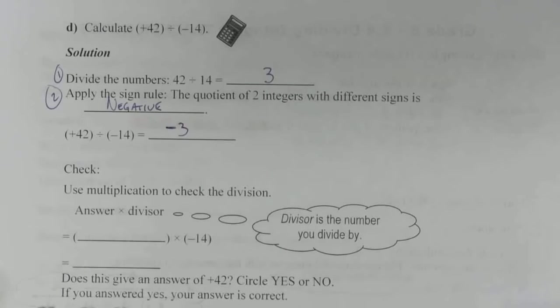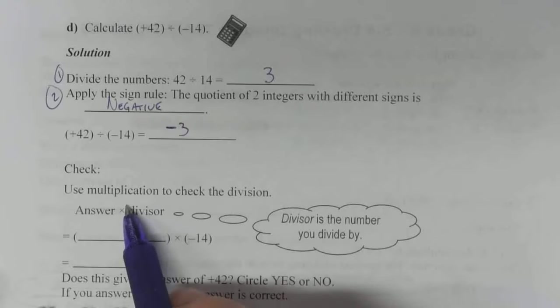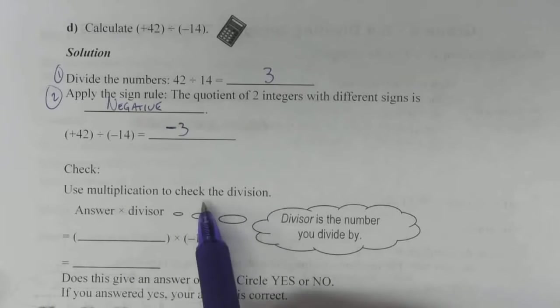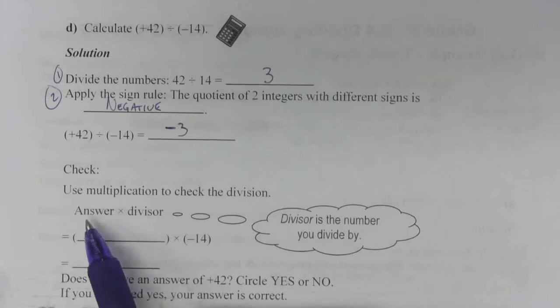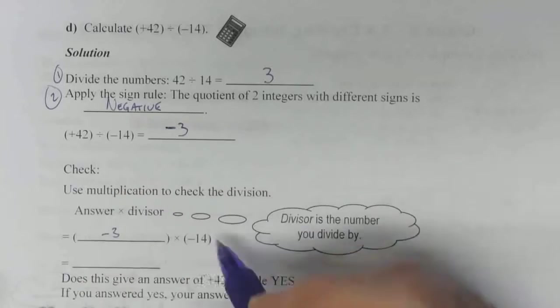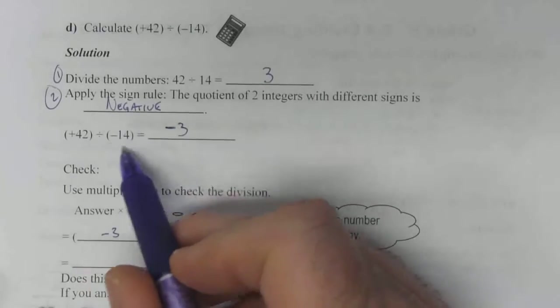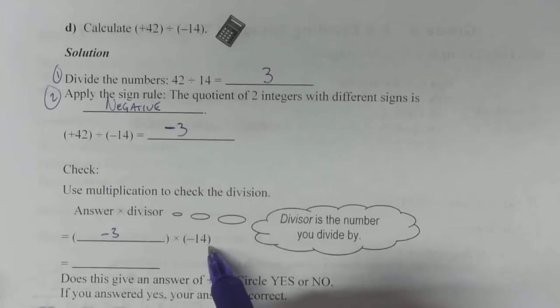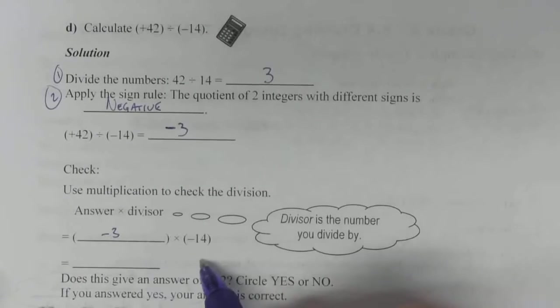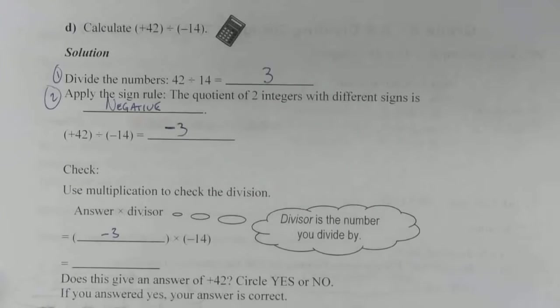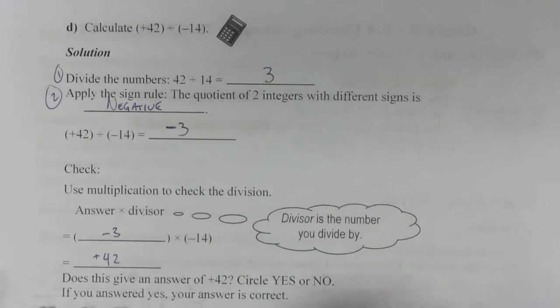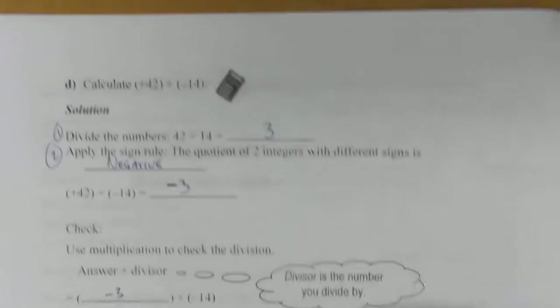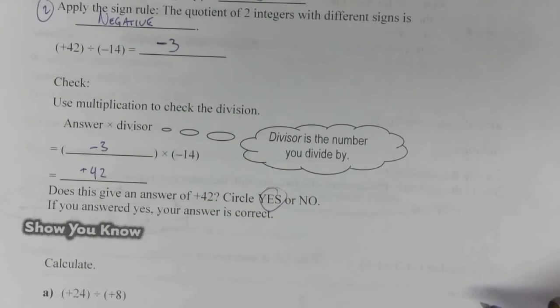You can use your calculator to double check this. You can use multiplication to check your division, using the opposite operation. Take your answer, which in this case was minus 3, multiply it by your divisor. Your divisor is the second number in your division question. Multiplying it by negative 14. When you do that, punch it into your calculator, 3 negative times 14 negative equals, you'll end up with a positive 42, which is the first number in your division question, so you know you've got it right.